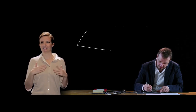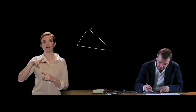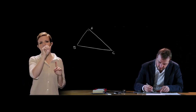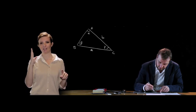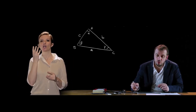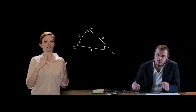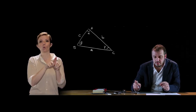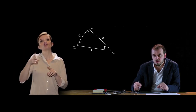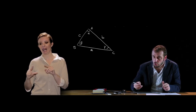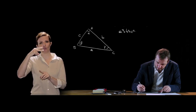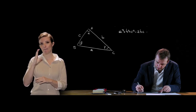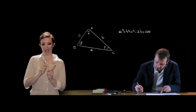L'ultima applicazione è il teorema di Carnot, riferito ai triangoli generici. Per il triangolo generico ABC con angoli α, β e γ e lati A, B e C, il teorema di Carnot afferma che il quadrato di un lato è uguale alla somma dei quadrati degli altri due lati diminuita del doppio prodotto di questi due lati per il coseno dell'angolo compreso. Ad esempio: A² = B² + C² - 2BC·cos(α).